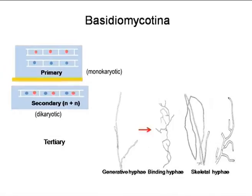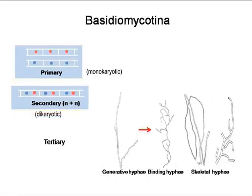Secondary mycelium is always dikaryotic and heterokaryotic, produced after dikaryotization. Tertiary hyphae are derivatives of secondary hyphae and are mainly meant for construction of fructifications or macroscopic fruit bodies. Primary mycelium of two different types contains genetically uniform nuclei — one marked red and another marked blue. In secondary mycelium, you will find two different types of nuclei in each compartment. Primary mycelium hyphae contain haploid homokaryotic nuclei, but secondary mycelium shows dikaryotic condition. From dikaryotic hyphae, skeletal hyphae and binding hyphae are produced, responsible for construction of macroscopic structures in Basidiomycotina.